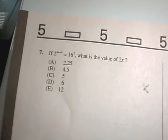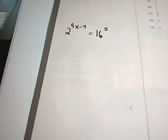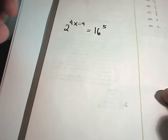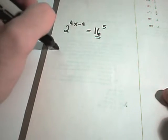it says 2 raised to the 4x minus 4 equals 16 raised to the 5th, what is the value of 2x? Alright, so again 2 raised to the 4x minus 4 equals 16 raised to the 5th power. I think probably the easiest way to do this one is to recognize that 16 is actually a power of 2.